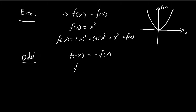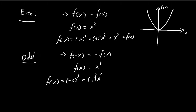Another example is f(x) = x³. You can check that this function satisfies this condition. f(-x) = (-x)³ = (-1)³ × x³ = -1 × x³, which equals -x³, which is equal to -f(x).